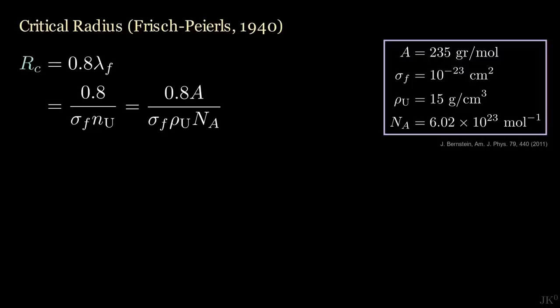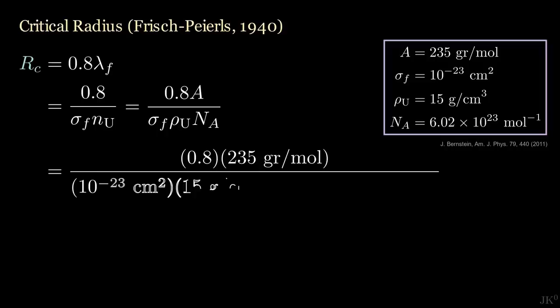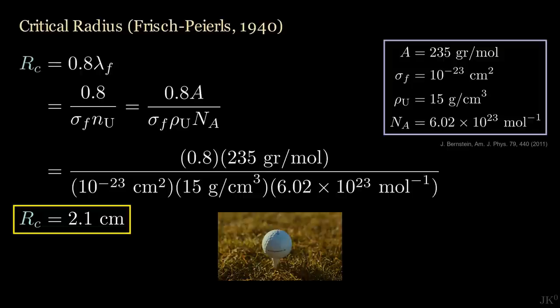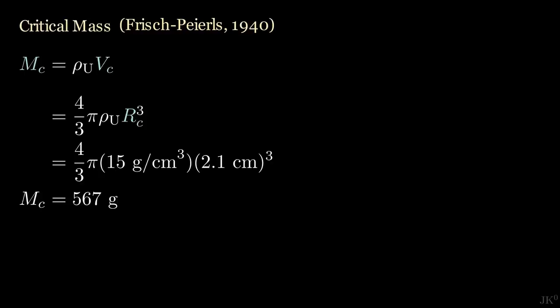This table on the right shows the list of values that they used in their calculation. Finally, plugging all these numbers, they found the critical radius to be 2.1 cm. This is the size of a golf ball. From the radius they could compute the critical mass, which they found to be less than 600 grams.